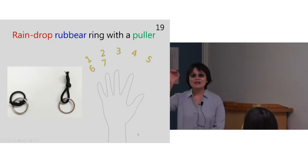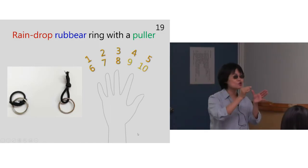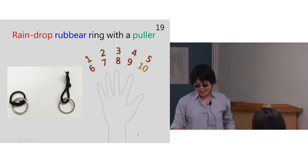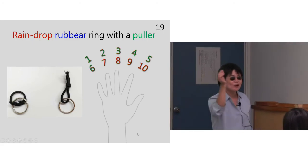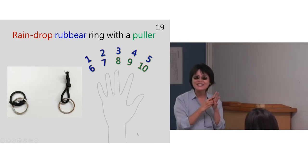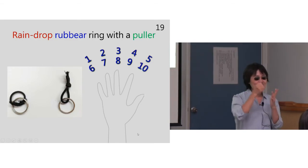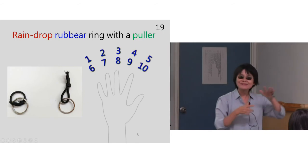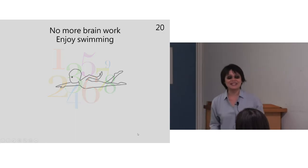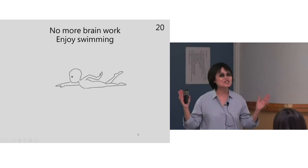This perfect rubber ring doesn't work because if the size fits into my thumb, it will not stay on my pinky finger. Okay, this rain-drop shape rubber ring stays nicely in each finger, and with the puller, I can easily move it out and move it between the fingers, you see. So ladies and gentlemen, no more hard work, just relax and enjoy swimming.